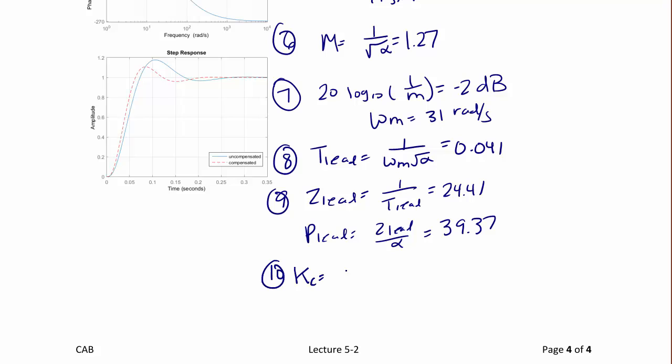We find the compensator Kc, which is equal to 1 over alpha, which equals 1.613, and finally we write the compensator GC of S is equal to 1.613 times S plus 24.41 divided by S plus 39.37.